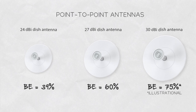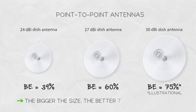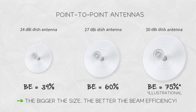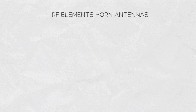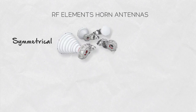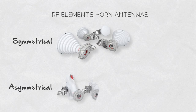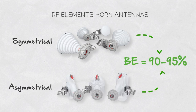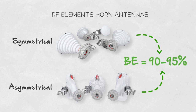A loose rule of thumb with dishes is that the bigger the size, the better the beam efficiency becomes, if carefully designed. For comparison, beam efficiency of symmetrical as well as asymmetrical horns is between 90 and 95% because of their optimized design with zero side lobe radiation pattern.